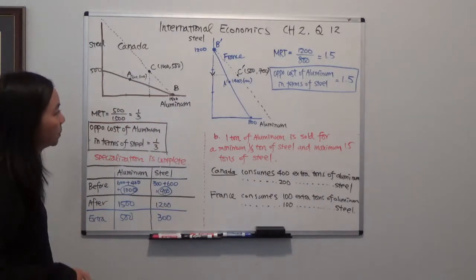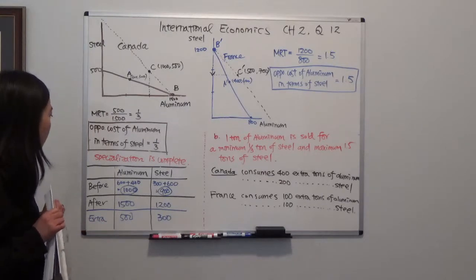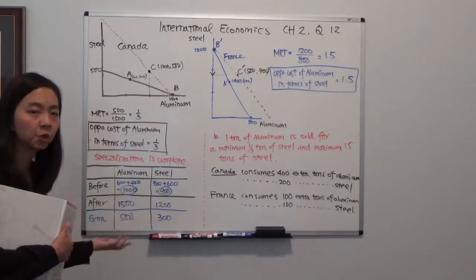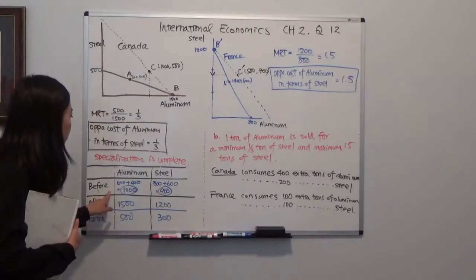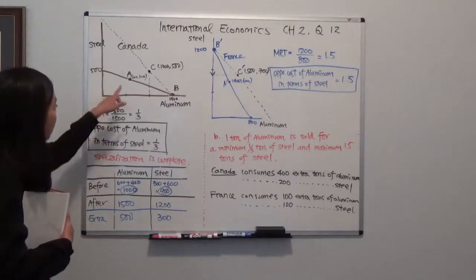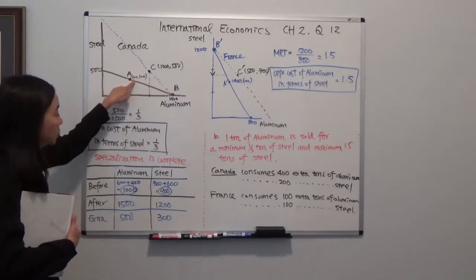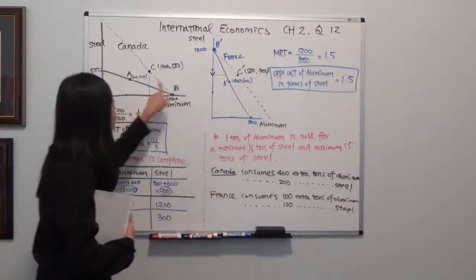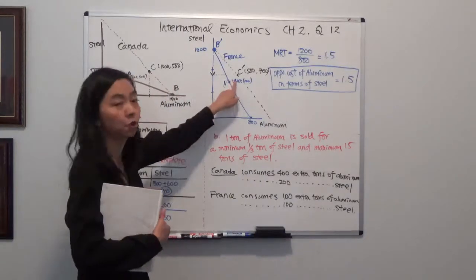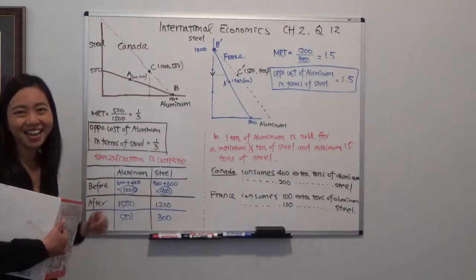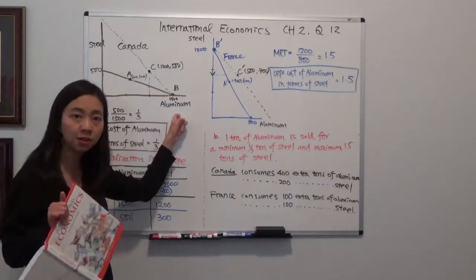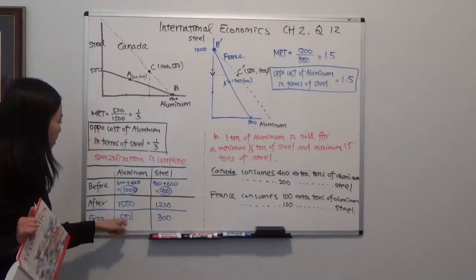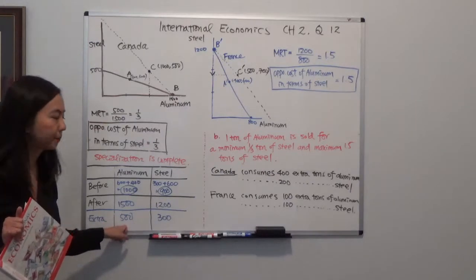The next question asks whether we produce more aluminum and steel after specialization compared to before, and the answer is yes. Before specialization, Canada produces 600 tons and France produces 400 tons of aluminum, for a total of 1000 tons. After specialization, Canada produces aluminum only, giving us 1500 tons total — so we have 500 extra tons of aluminum.